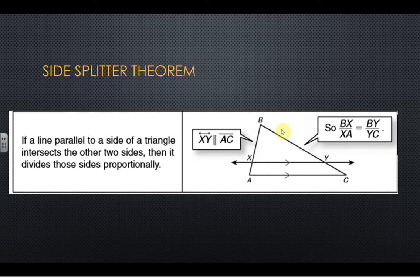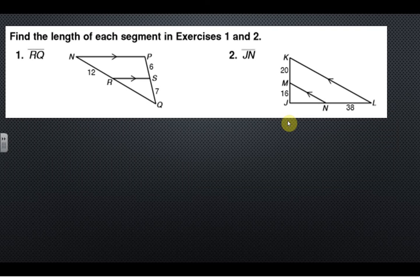So let's go over that. Find the length of each segment, so they're looking for RQ. So that's my x. With this side splitter theorem that would mean 12 over x, so part over part, equals 6 over 7, the other part over the part, and you get 14 when you solve for that.